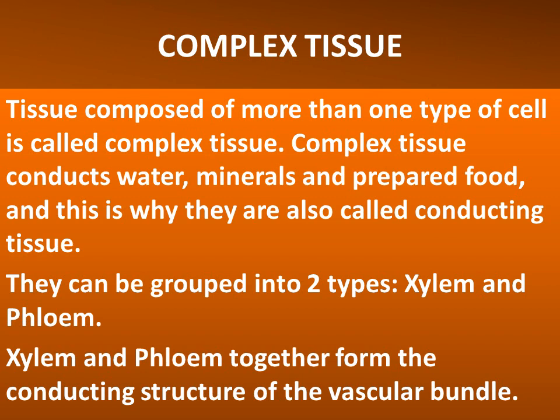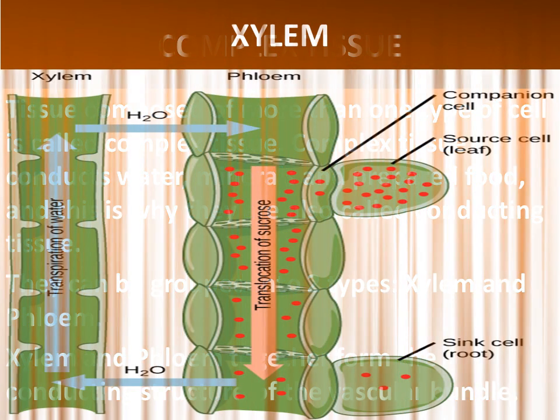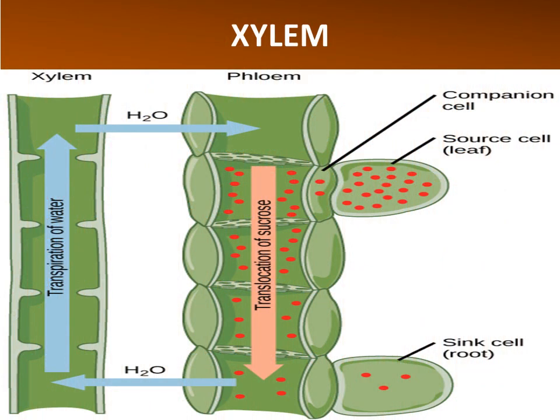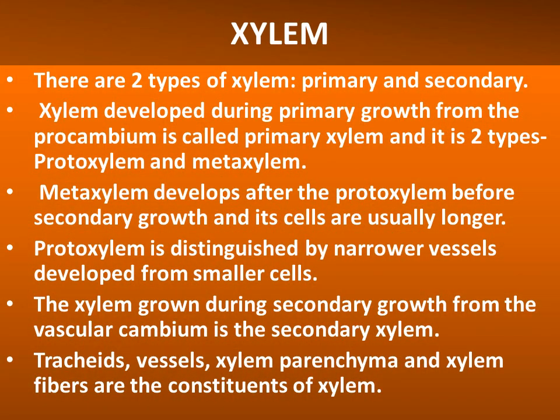Xylem and phloem together form the conducting structure of the vascular bundle. This is a structure of xylem. There are two types of xylem: primary and secondary.